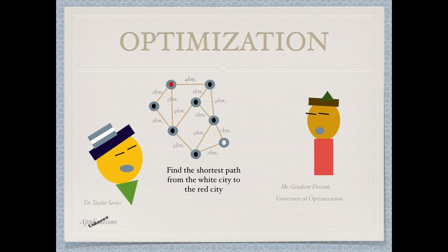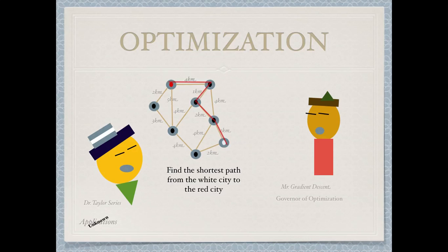Optimization is used, for instance, when you have to find the shortest path in maps. If you give a route in your navigator in your car, then typically the navigator will use an optimization algorithm to find the shortest path between two points. For example, if you want to travel from the white city to the red city, one path has a total distance of 10 km. However, if you ask an optimizer to make the route as short as possible, you might find a path that is only 9 km. That is typically the task of an optimization algorithm — to find extremal answers to certain questions. In this case, to find the shortest path, which is called the minimum.